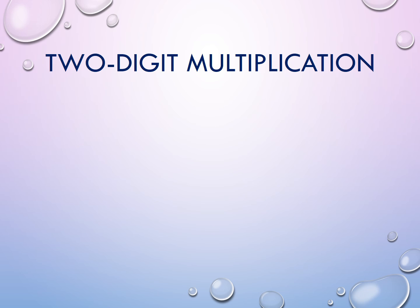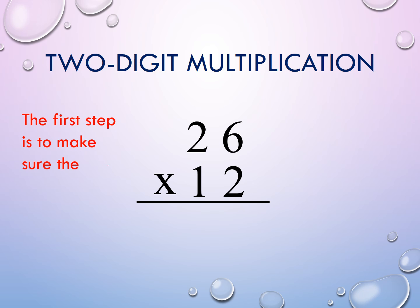2-digit multiplication, 26 and 12. 26 times 12. The first step is to make sure the place values are lined up. There's a 1's place, there's a 10's place.